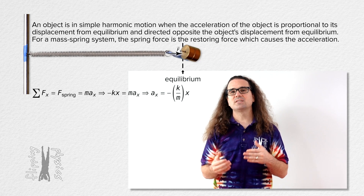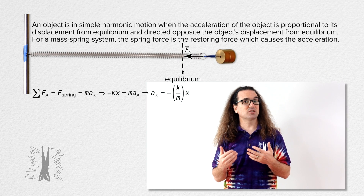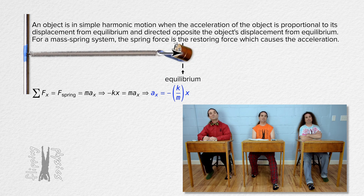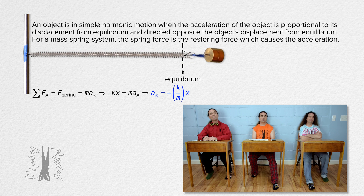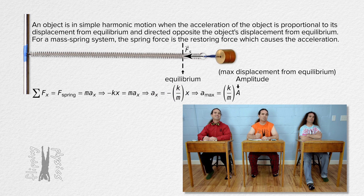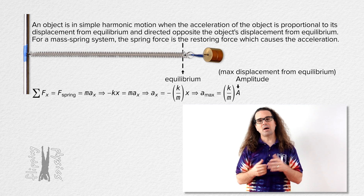What is the maximum acceleration of a mass in a mass spring system equal to? If that is the equation for the acceleration of the mass, the maximum distance from equilibrium is amplitude, so the maximum acceleration equals the spring constant over mass, all times amplitude. Thank you, Bobby.